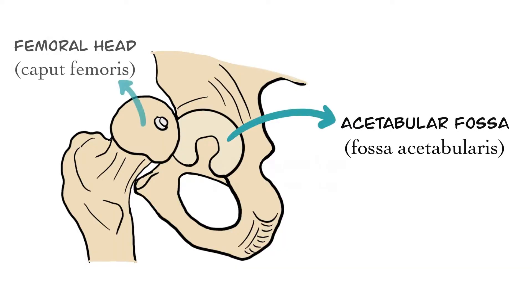The hip joint forms by acetabular fossa and femoral head. In Latin, acetabular fossa is also known as fossa acetabularis and femoral head is known as caput femoris. Caput means head. While the femoral head is two-thirds of a sphere, acetabular fossa is half of a sphere.